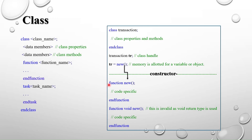Inside the class, 'function new' is the constructor. A constructor does not have a void return type — we write 'function new', not 'function void new'. Inside the constructor you can initialize values. It is a built-in constructor, so you don't have to implement it unless you want to set specific initial values; you can just call 'tr = new()'. Using void with new is invalid, as the constructor does not return anything. Now we will see full examples for classes.